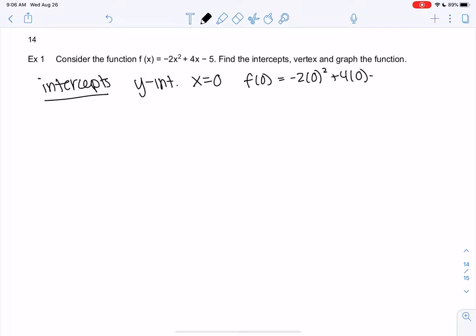So f of 0, we just plug in 0. I do this one first, because it's easier. And we notice it'll match the c value. So 0, negative 5 is my y-intercept. We could probably do that without plugging in. It's always c.